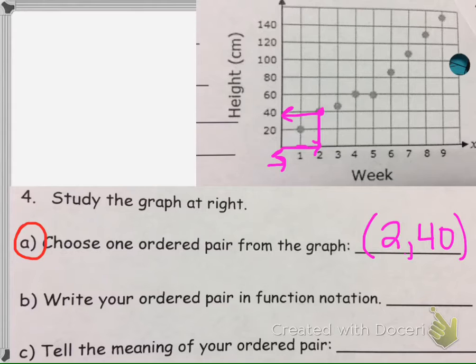So again, for question A, there are more than one correct answer. You could also have 1 comma 20, etc.